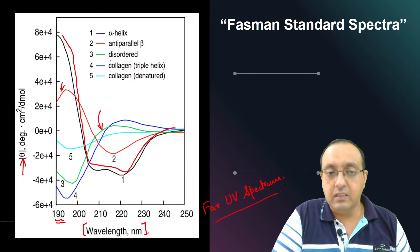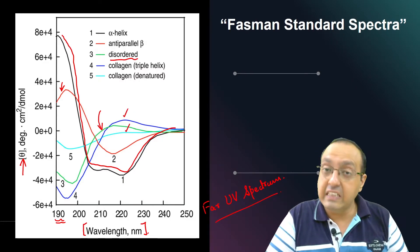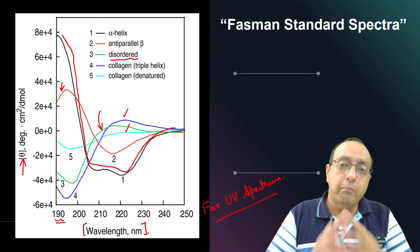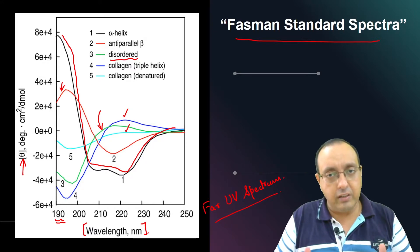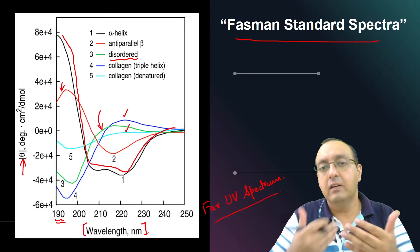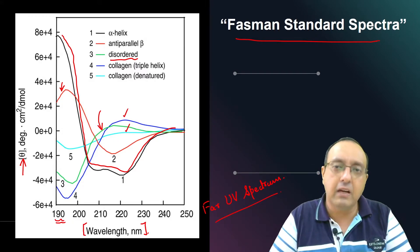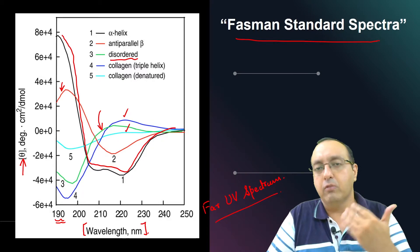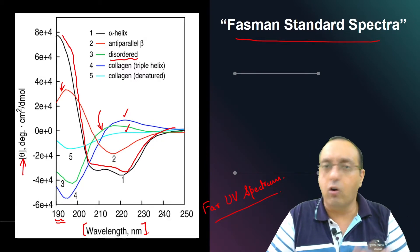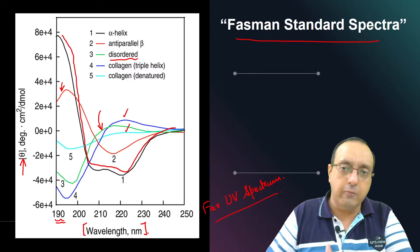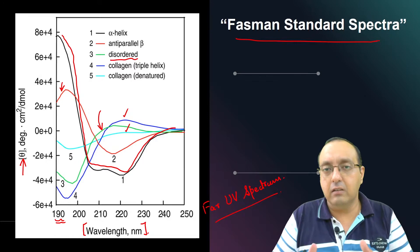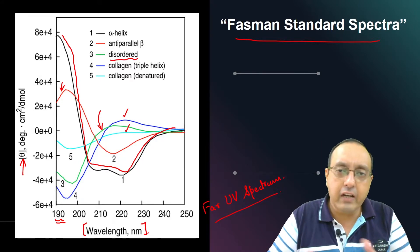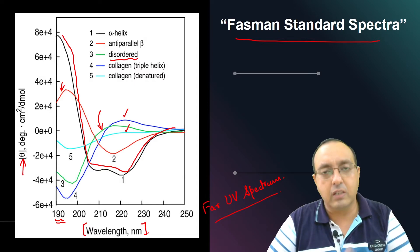For example, the black line shows the spectrum of an alpha helix, the red shows anti-parallel beta sheet, green is disordered random coil, and blue and light blue are collagen triple helix and denatured collagen respectively. If we compare our protein of interest with these standard spectra — called Phasmin standard spectra — using mathematical functions, we can estimate the amount of secondary structure, for example whether our protein is 80% alpha helix and 20% beta sheet, or 70% alpha helix, 20% beta sheet, and 10% random coil.